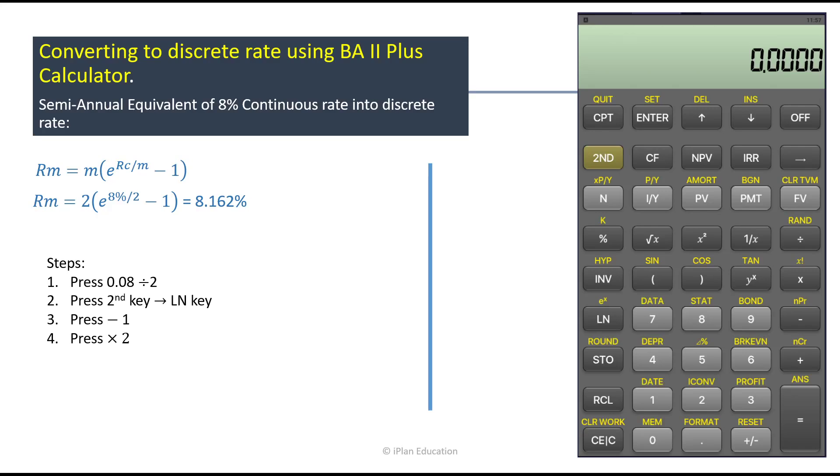Hello friends, I'm Praveen Khaitan. In today's video we will learn about how to convert continuous rate into discrete rate using BA 2 Plus calculator. So today we will calculate semi-annual equivalent of 8% continuous rate into discrete rate, which means that the 8% continuous compounded rate we will convert it to the discrete rate so that we could achieve the same interest amount.